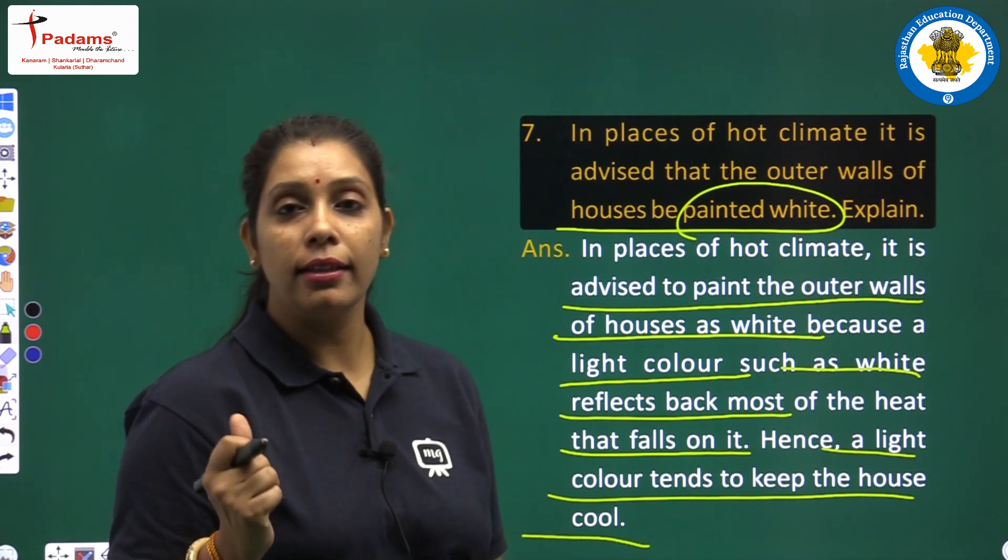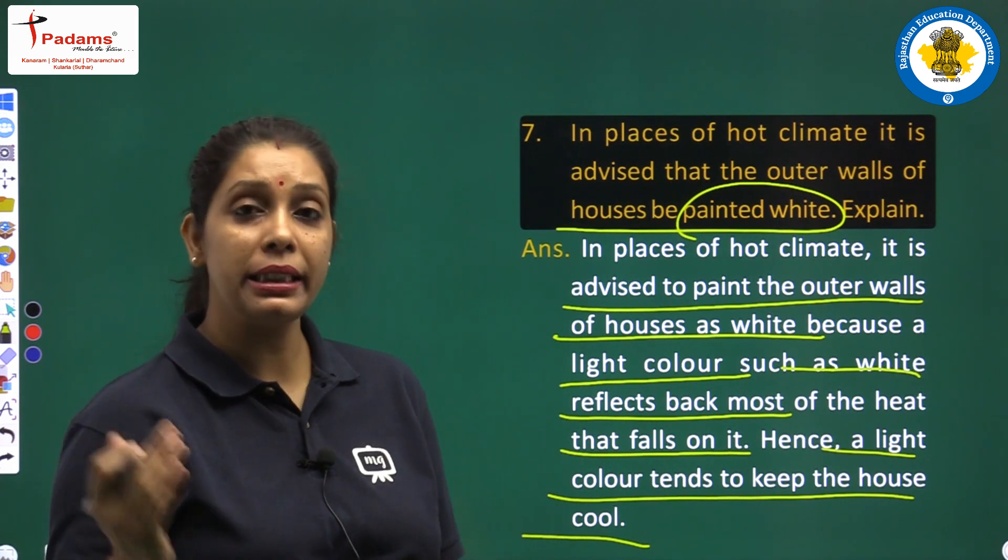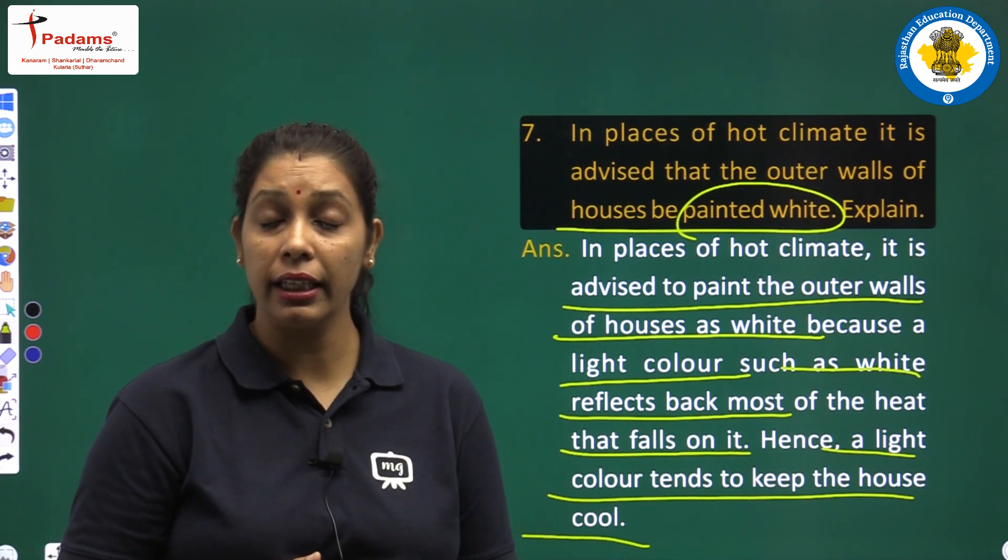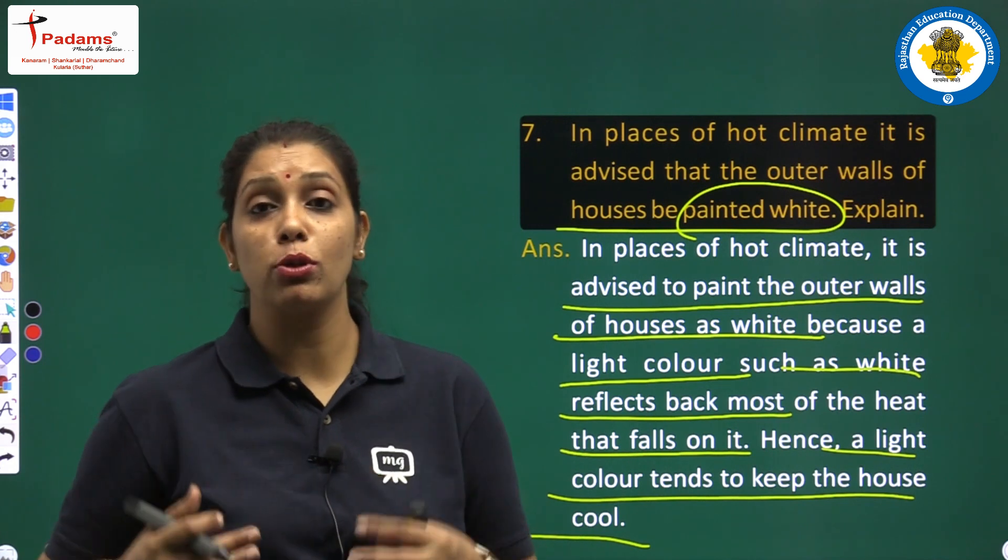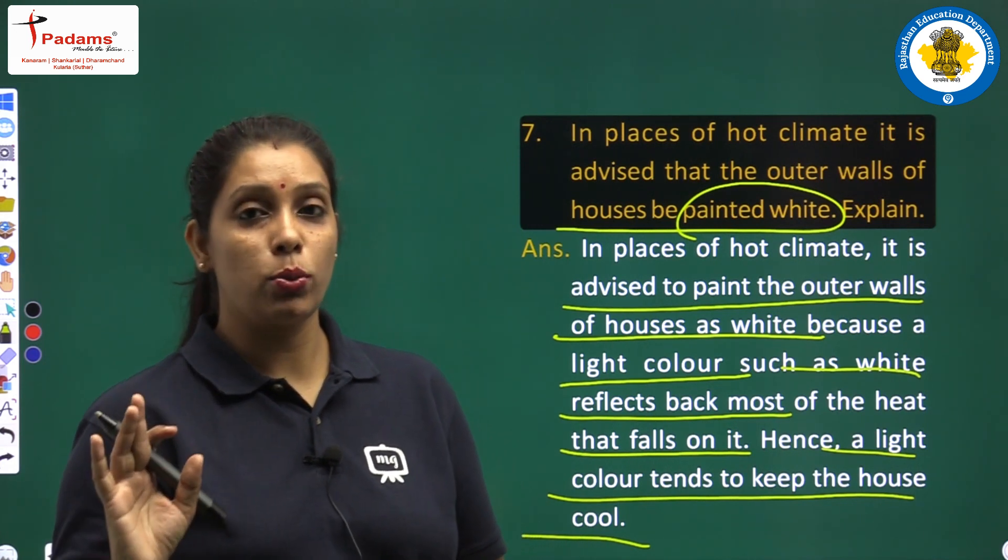Light colors give you a cool feeling. They reflect light the most. When light is reflected, that means heat absorption is the least.